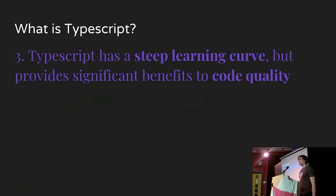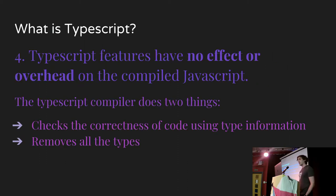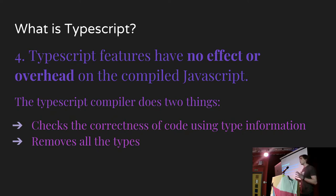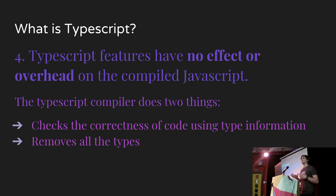It's got a fairly steep learning curve — probably not as steep as PureScript — but it's got some nice benefits to code quality once you get it working and really get your type support up. Once you've got it set up, it's not a lot of overhead over developing in JavaScript. The compiler does two things: it checks your code is correct using the type information you've provided — kind of like a supercharged linter — and then it just removes all the types, so what you end up with is as if you'd never written any types.